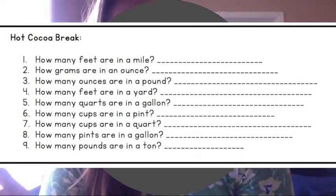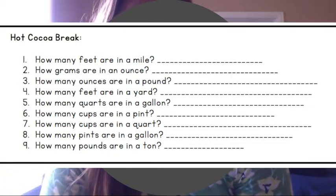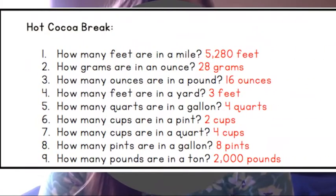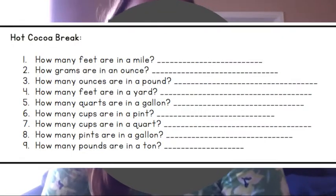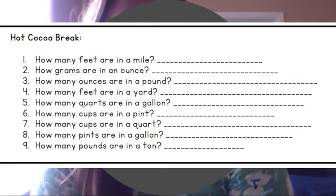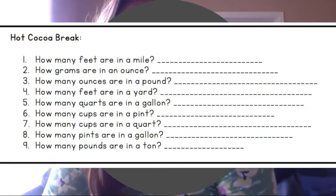How many grams are in an ounce? So remember, 28 grams in an ounce. Let's check it. 28 grams is right. How many ounces are in a pound? 28 grams in an ounce, 16 ounces in a pound.